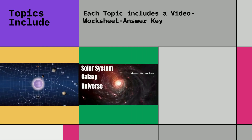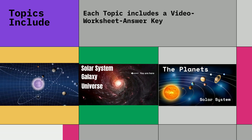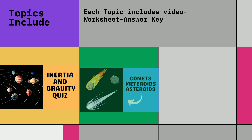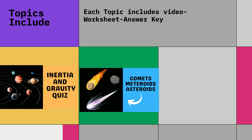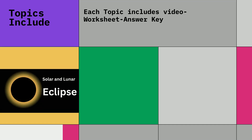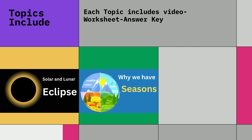solar system vs. galaxy vs. universe, the planets, gravity and inertia working together, comets, asteroids and meteoroids, phases of the moon, solar and lunar eclipses, and the reason for the seasons.